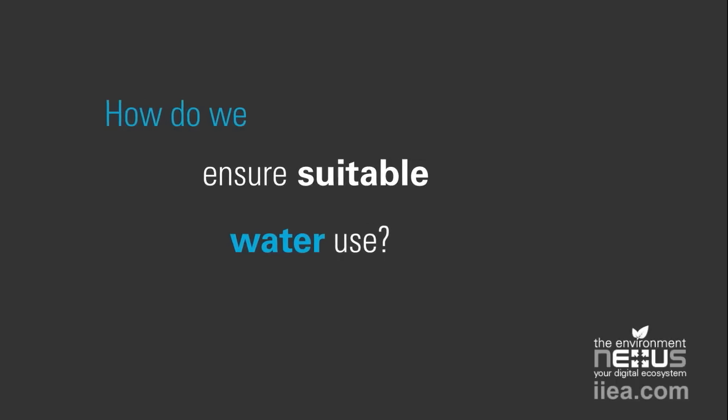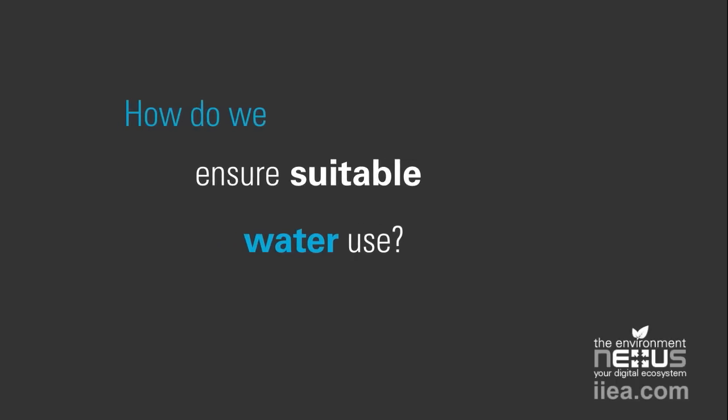For governments, it would be most appropriate if they set water footprint caps per river basin. It means that there is a maximum amount of water available per river basin — a maximum amount of rain in the basin. A water footprint cap will make sure that the water footprint within the basin will not exceed the maximum sustainable water footprint. This is what governments should do in every catchment in the world.